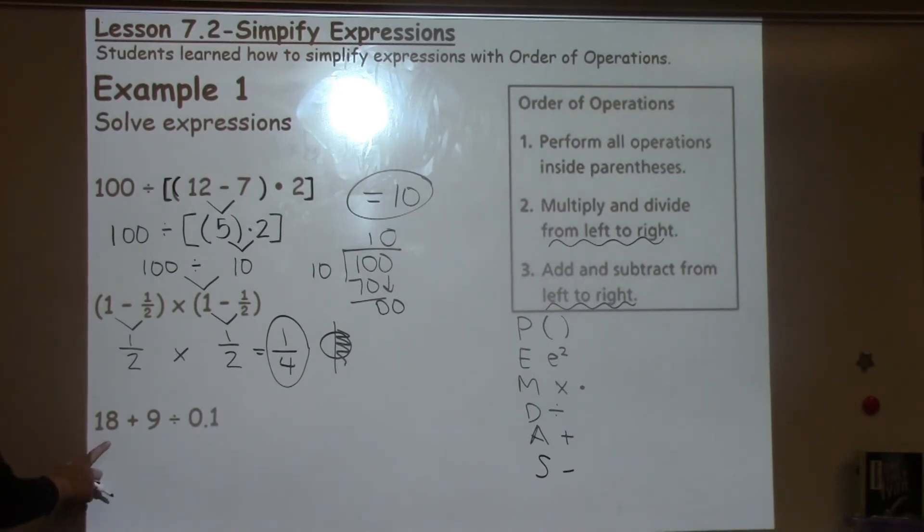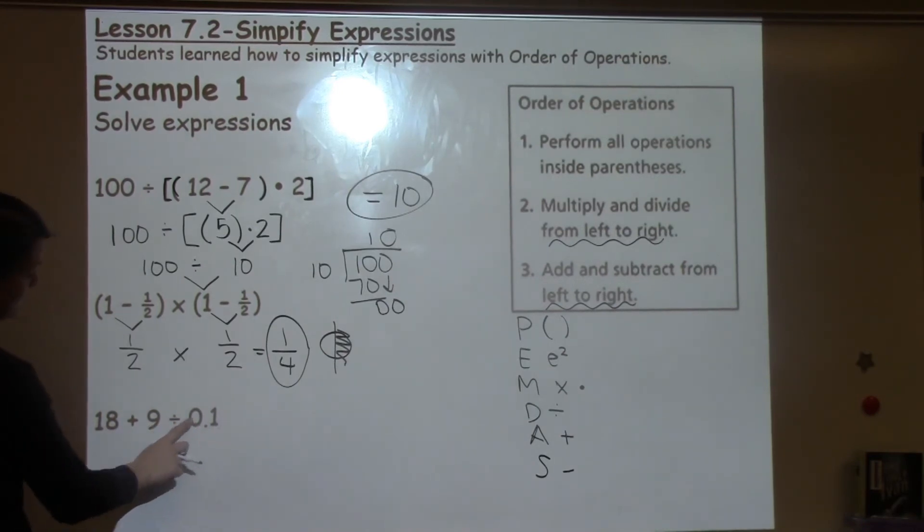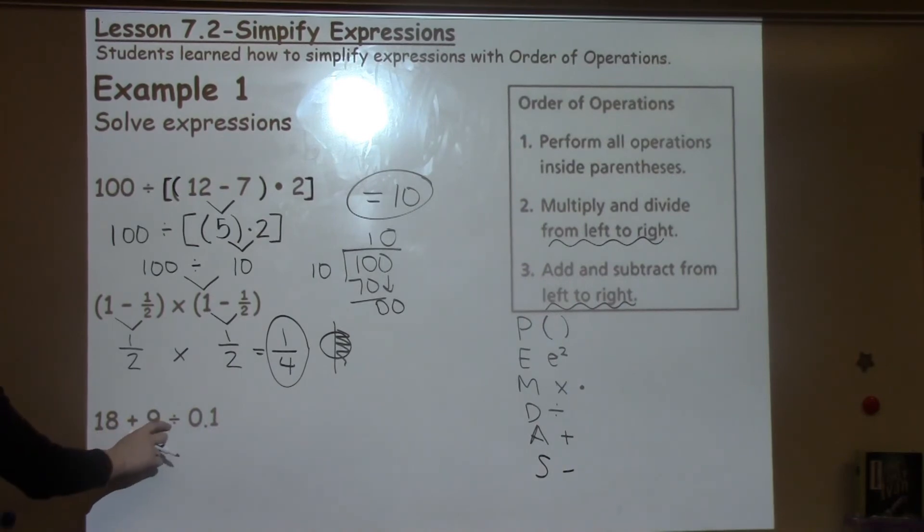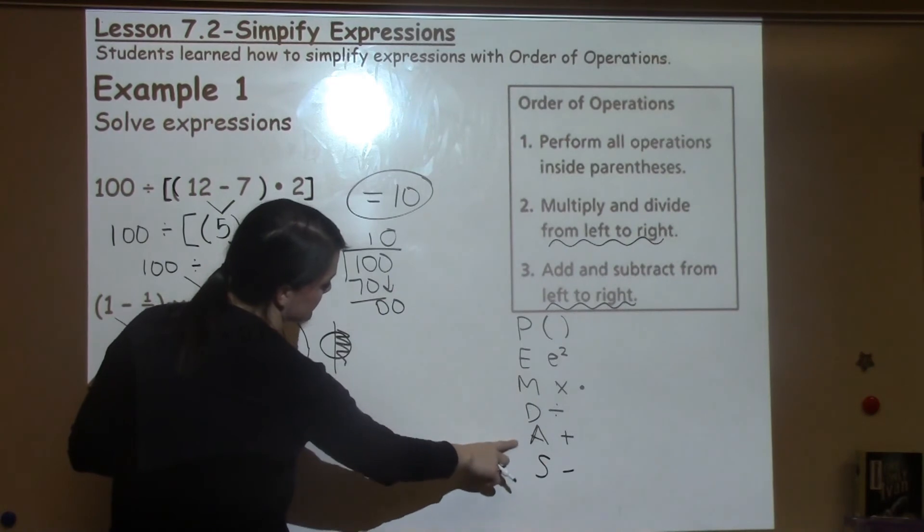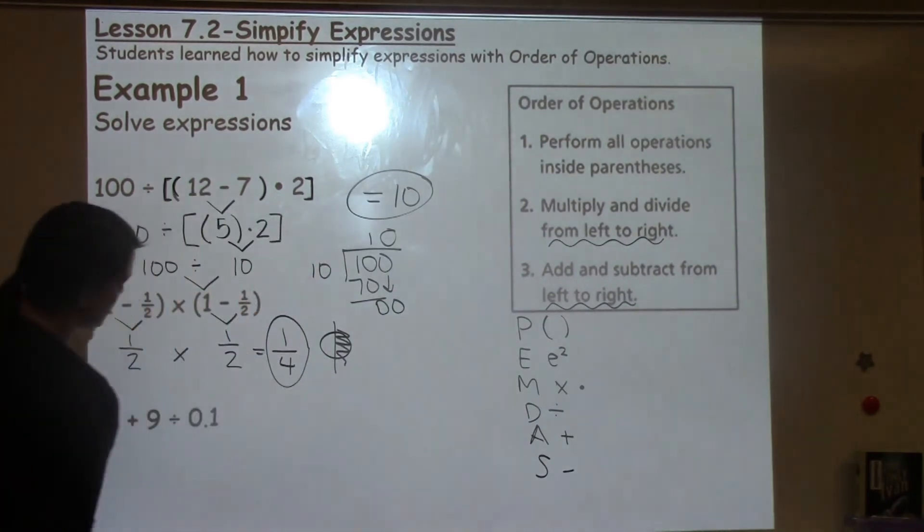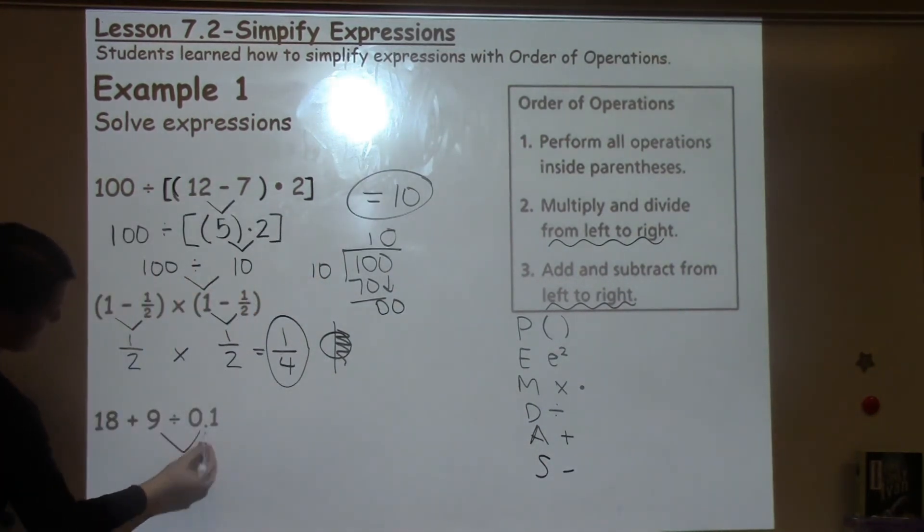Our last example says 18 plus 9 divided by 1 tenth. So I've got plus and I've got division. I need to look here and decide which one comes first, addition or division. I see the division comes first, so I'm going to do that first.